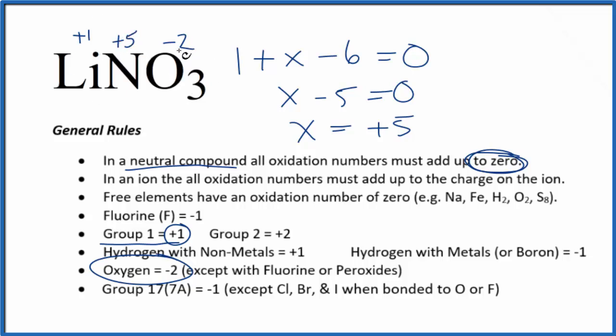If we add these up, three times minus two, that's minus six, plus five, plus one, that gives us our zero. This is Dr. B with the oxidation number for each element here in LiNO3. Thanks for watching.